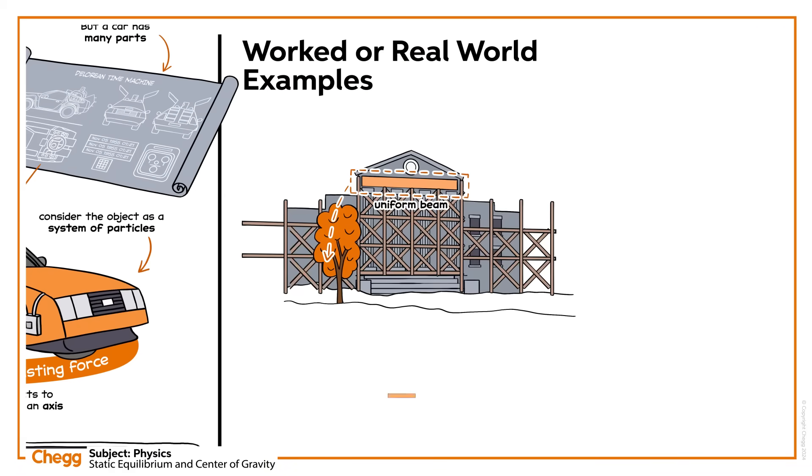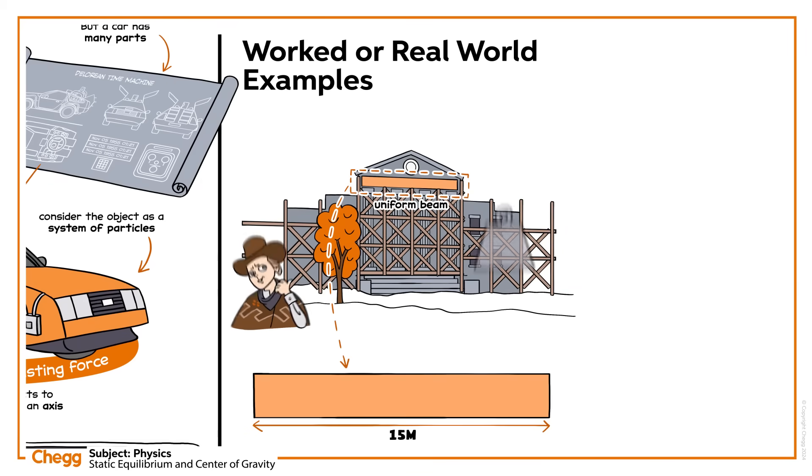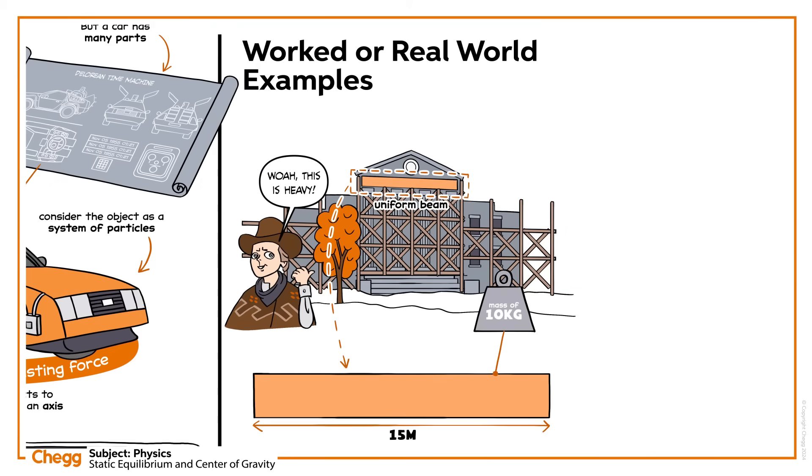Consider a uniform beam of length 15m and mass 10kg aligned along the positive x-axis from the origin. A mass of 3kg is placed at 5m from the beam's left end and another 6kg mass is placed at 8m from the left end.